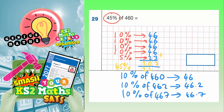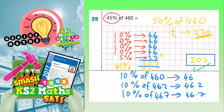So our final answer is 207. It makes sense when you think about it — 50% of 460 would be half of that, which is 230. So we've got an answer slightly less than 230, which is 207. If 50% is 230, then 45% — a bit less — is going to be a bit less than 230. We've got 207, so that is the correct answer.